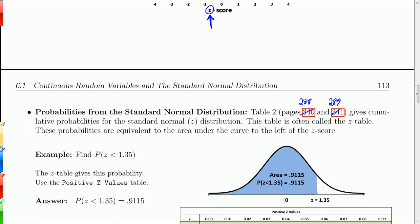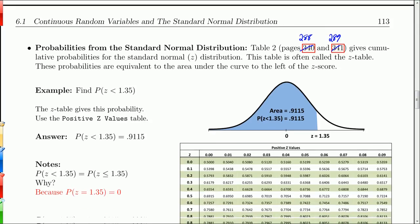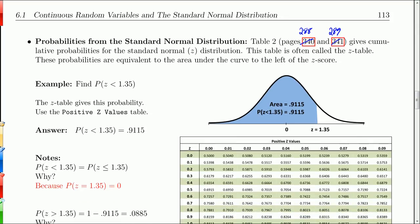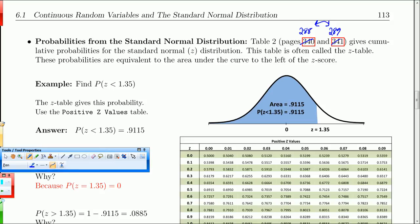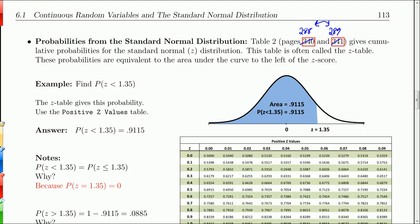We're going to get some probabilities from the standard normal distribution. Later, when we deal with other normal distributions, we will convert them to the standard normal. The table to find these probabilities is found on pages 288 and 289. There are actually two tables, so let's take a look at those.